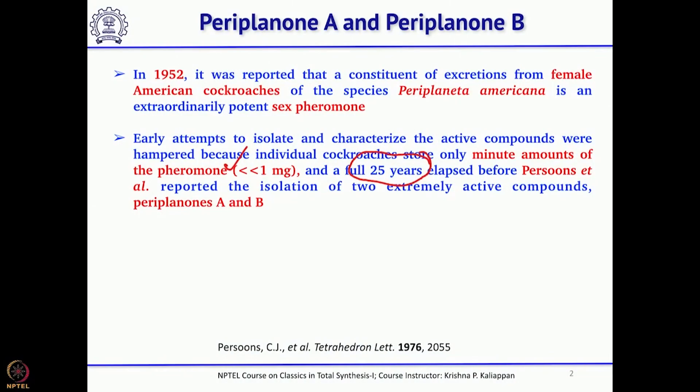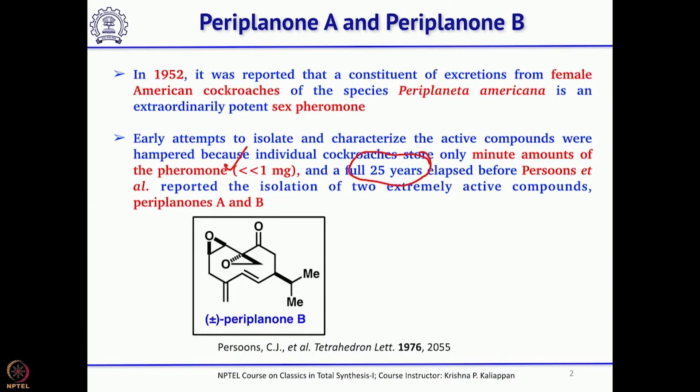Periplanone B is a very interesting natural product. It was isolated from American cockroaches and is a sex pheromone. This compound was important because very minute quantities of the pheromone were obtained — less than a milligram — and it took about 25 years to report the isolation of two pheromones: Periplanone A and Periplanone B.